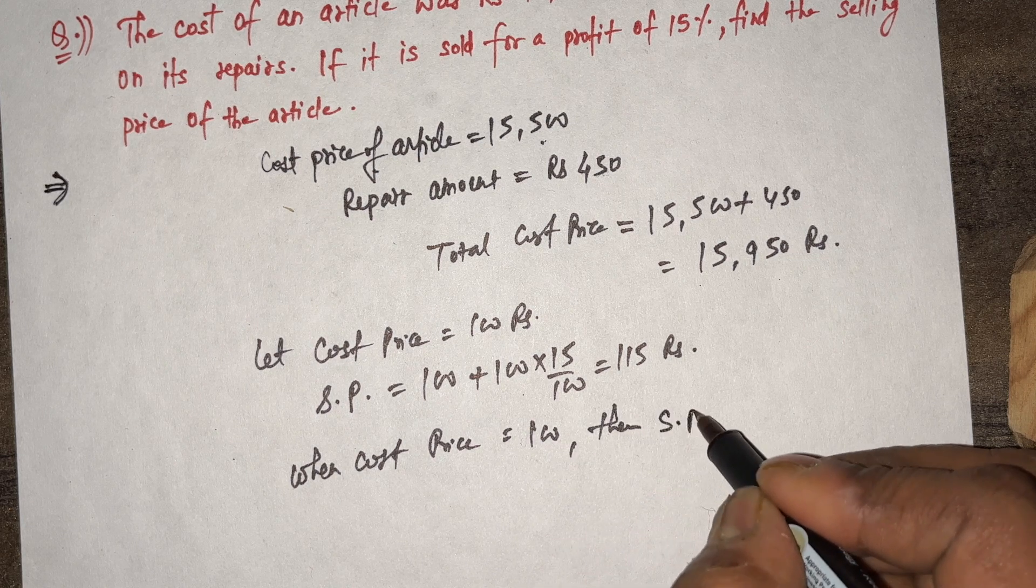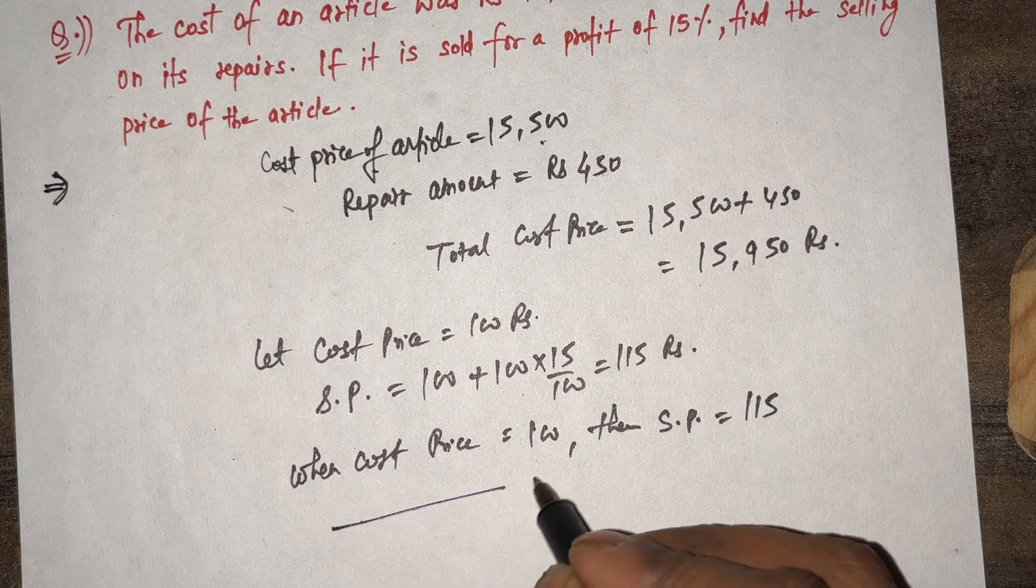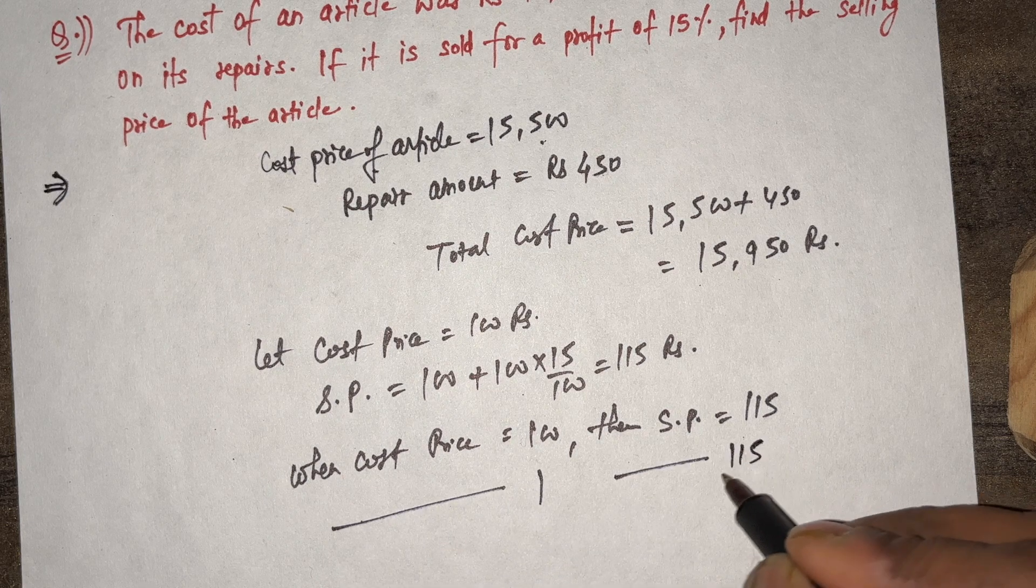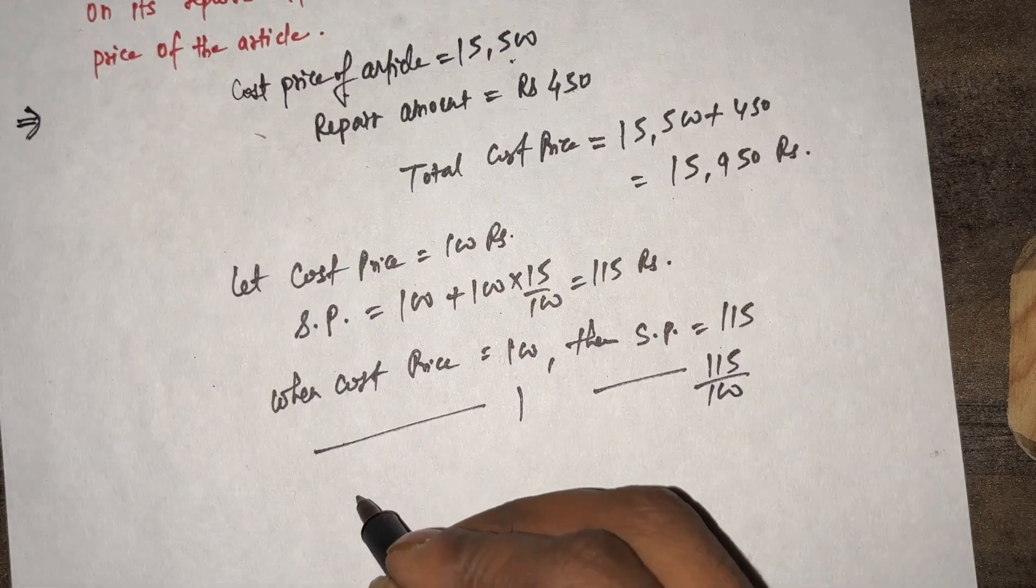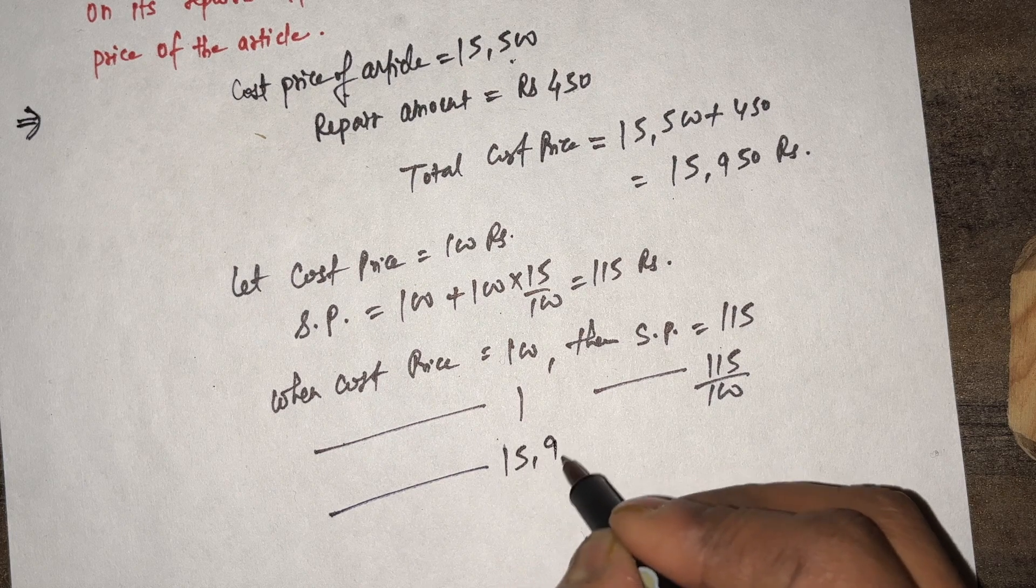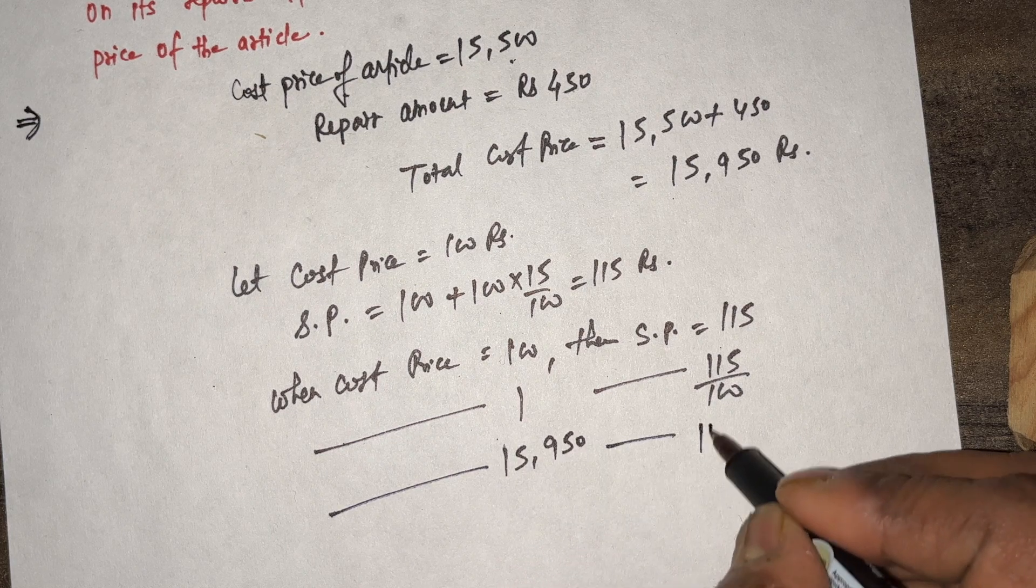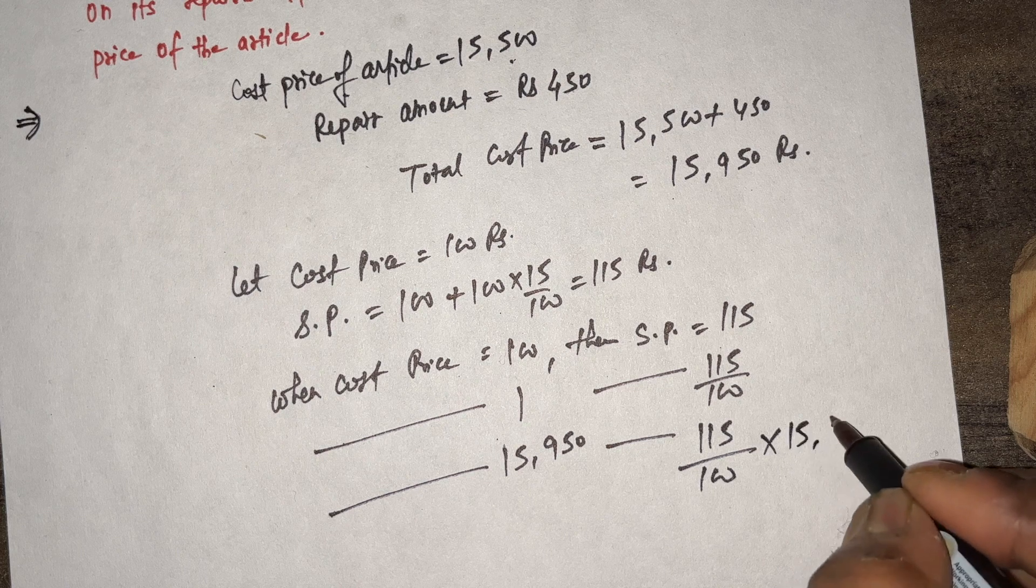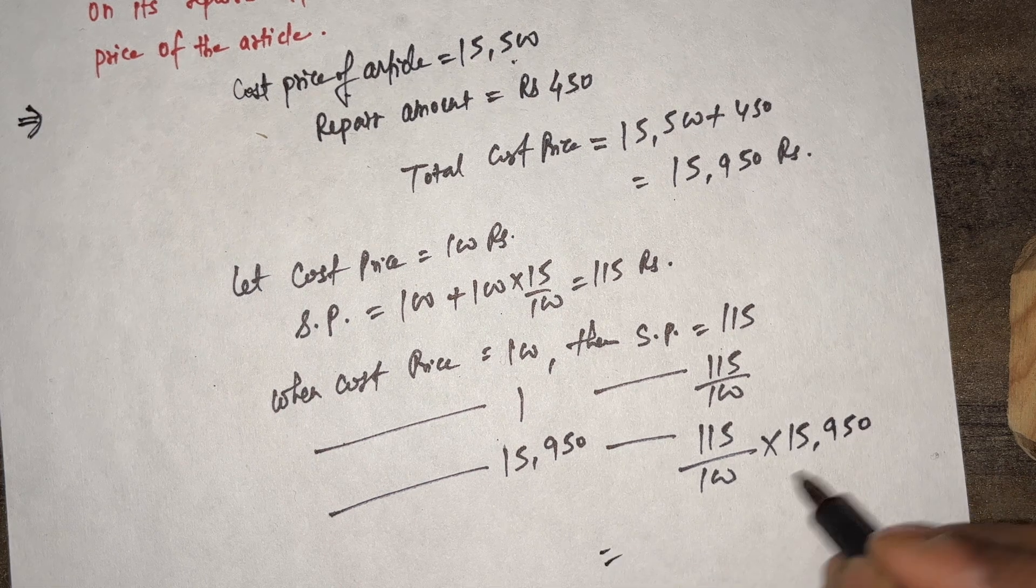selling price equals 115. When cost price is 1, selling price will be 115 divided by 100. When cost price is 15,950, then selling price becomes 115 divided by 100 multiplied by 15,950 equals